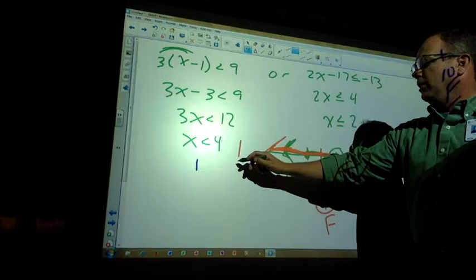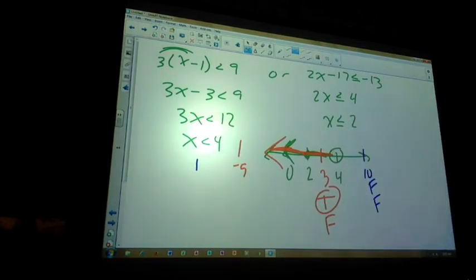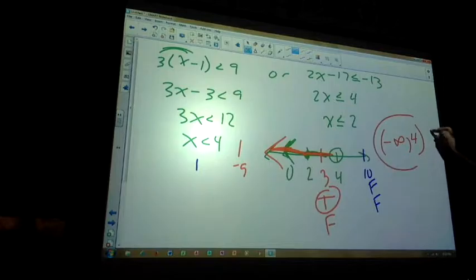Now, if I pick, say, you know, like negative 5. Negative 5 is less than 4. It gives me true, true or something. Okay. So, my answer is coming from negative infinity, and it's going all the way up to 4. Rounded bracket.